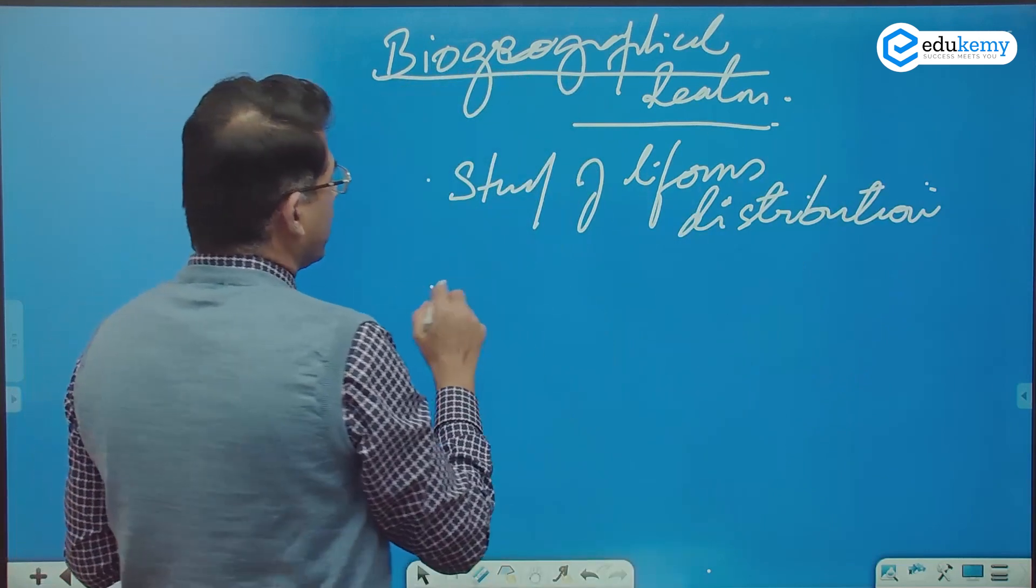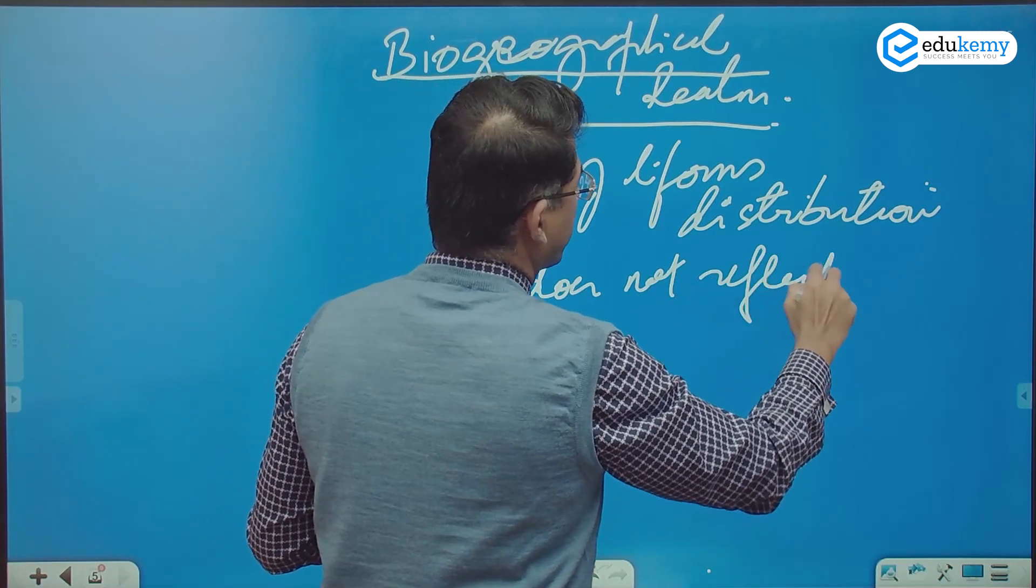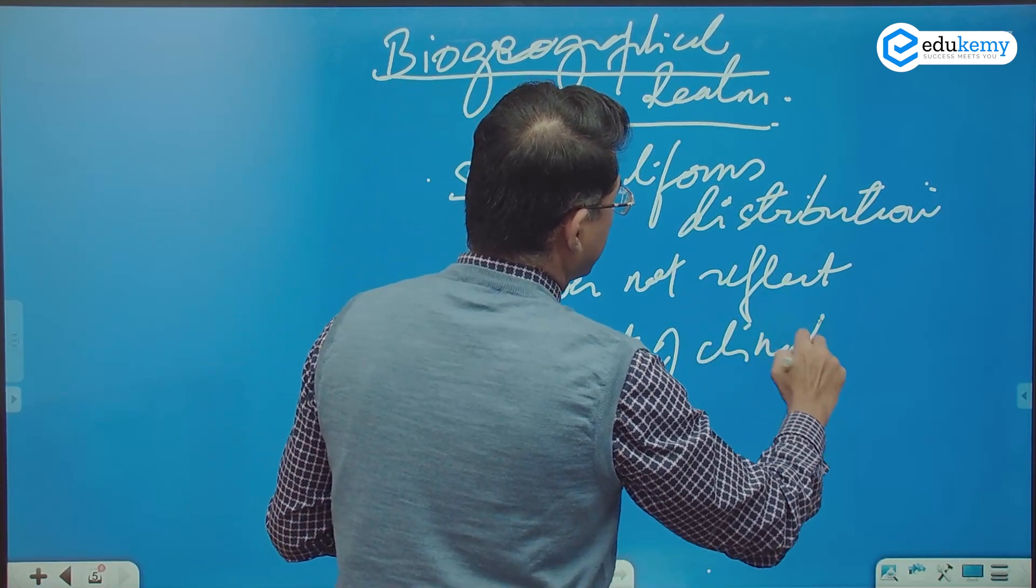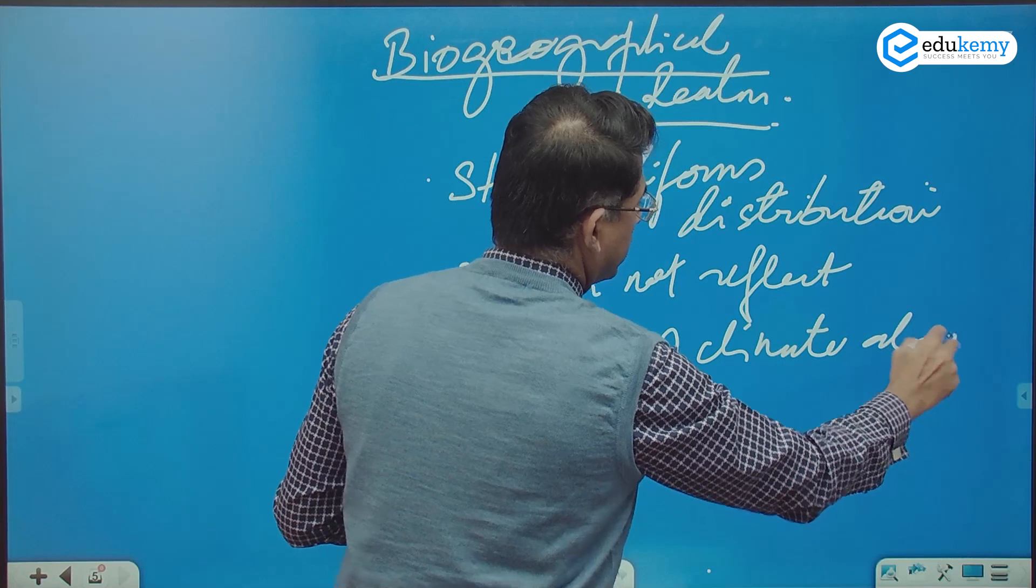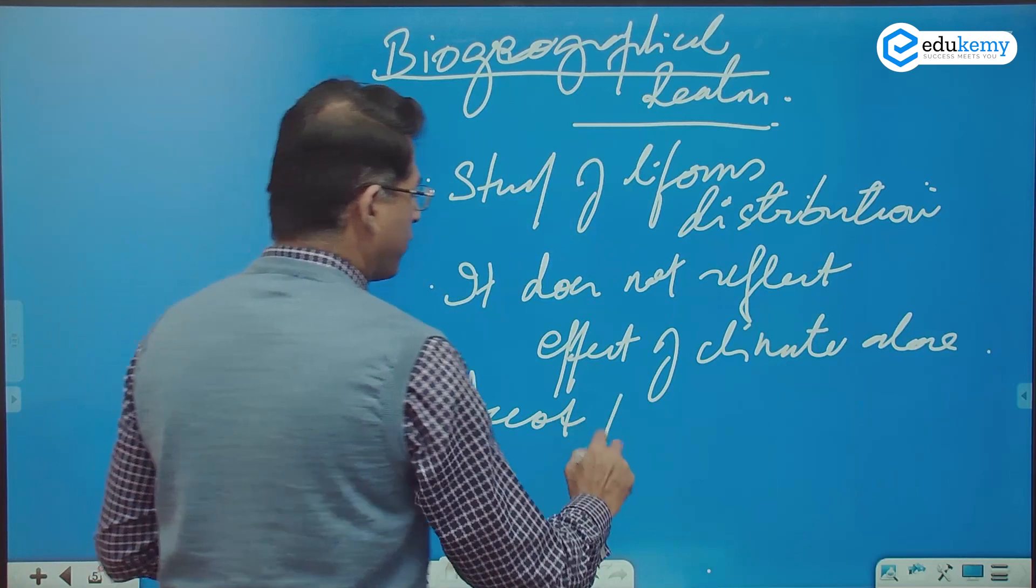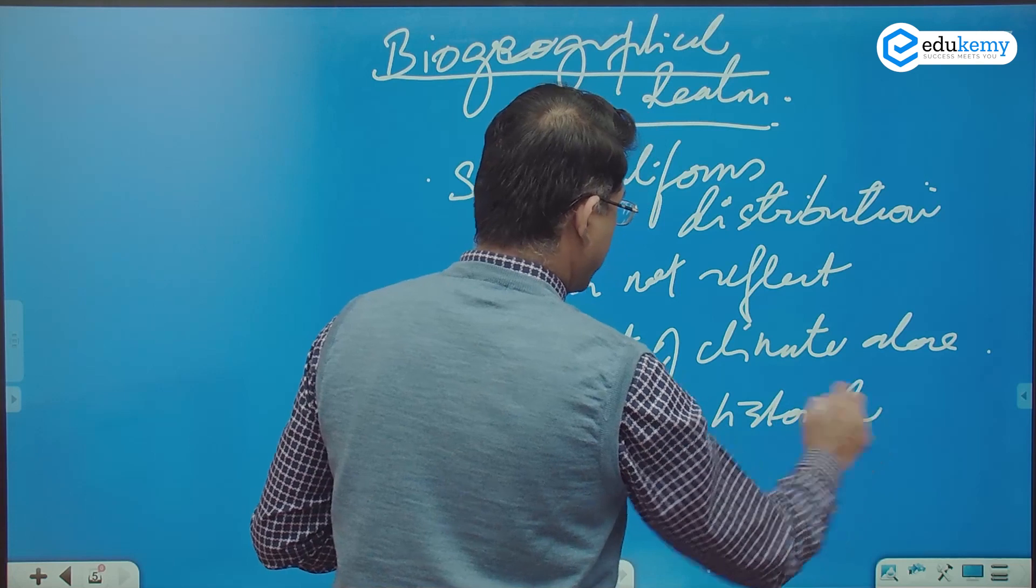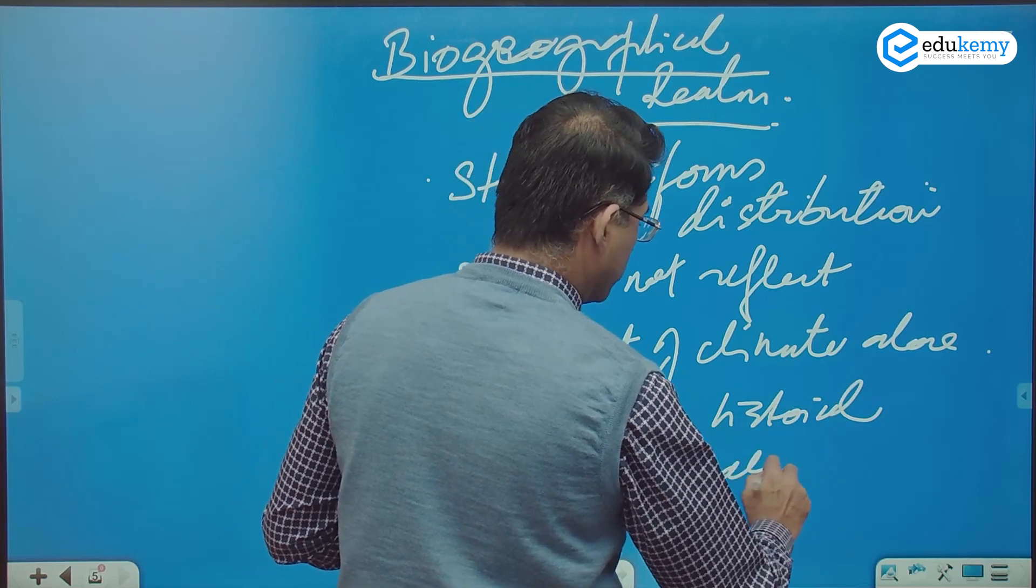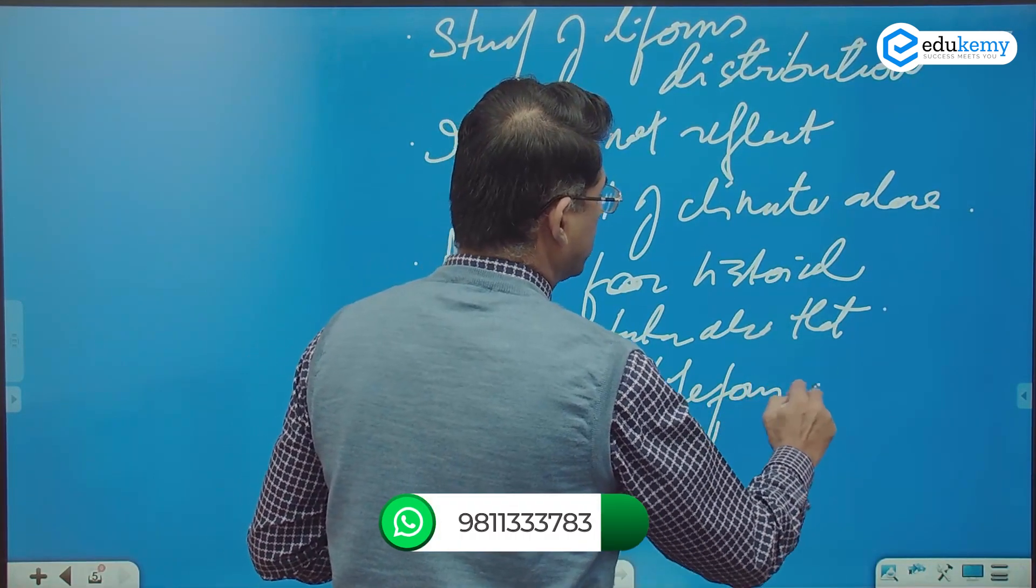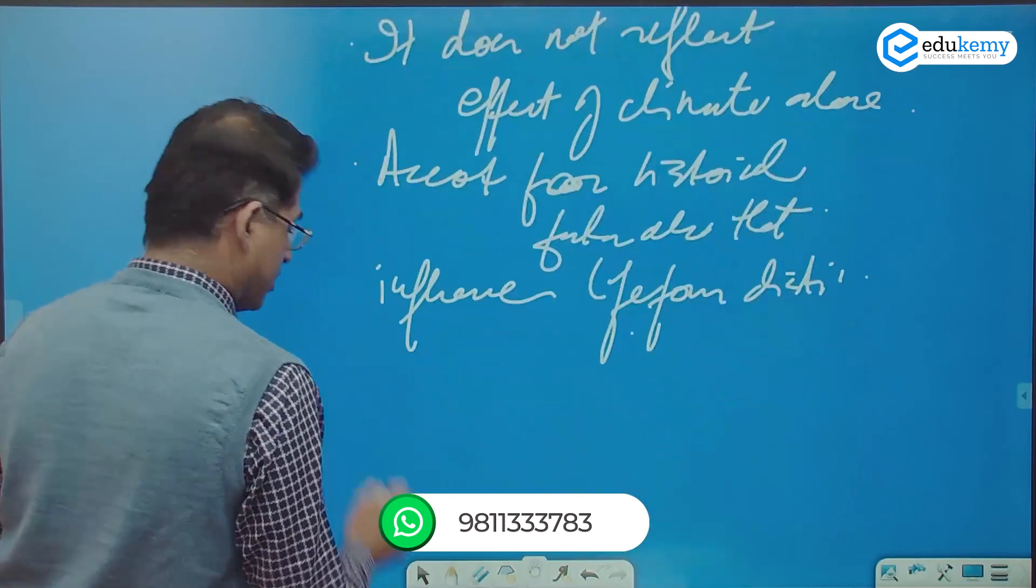Number two, it does not reflect the effect of climate alone. It accounts for the historical factors, historical factors also that influence life forms distribution.